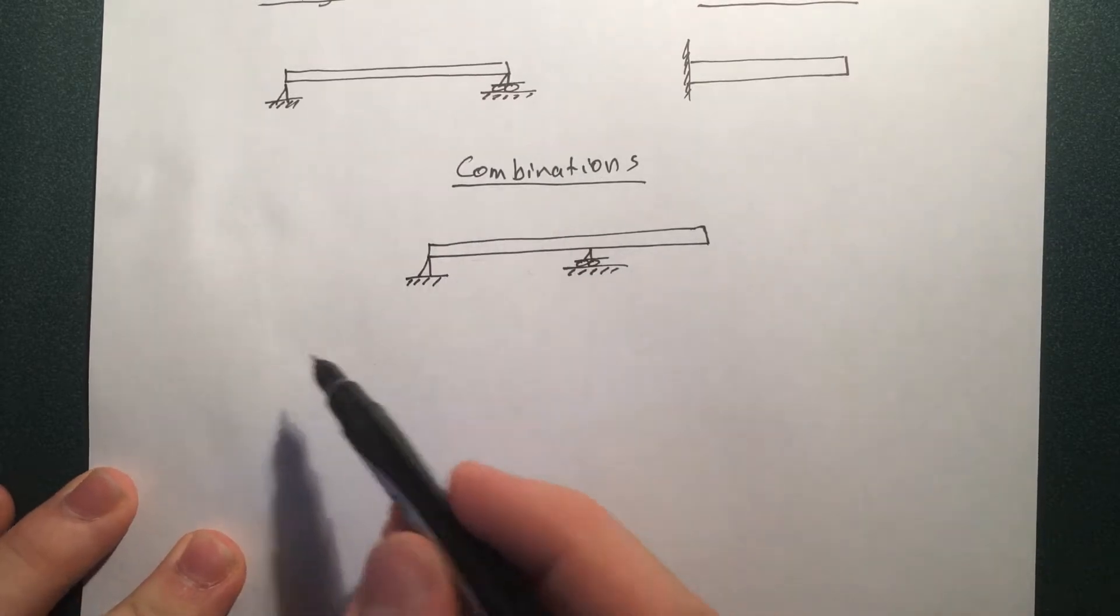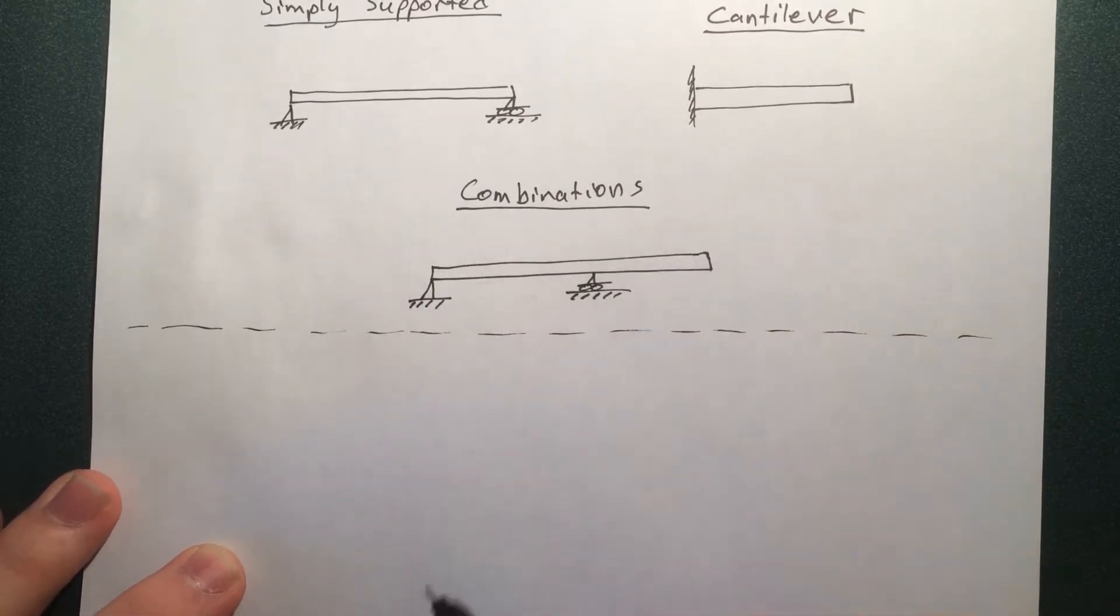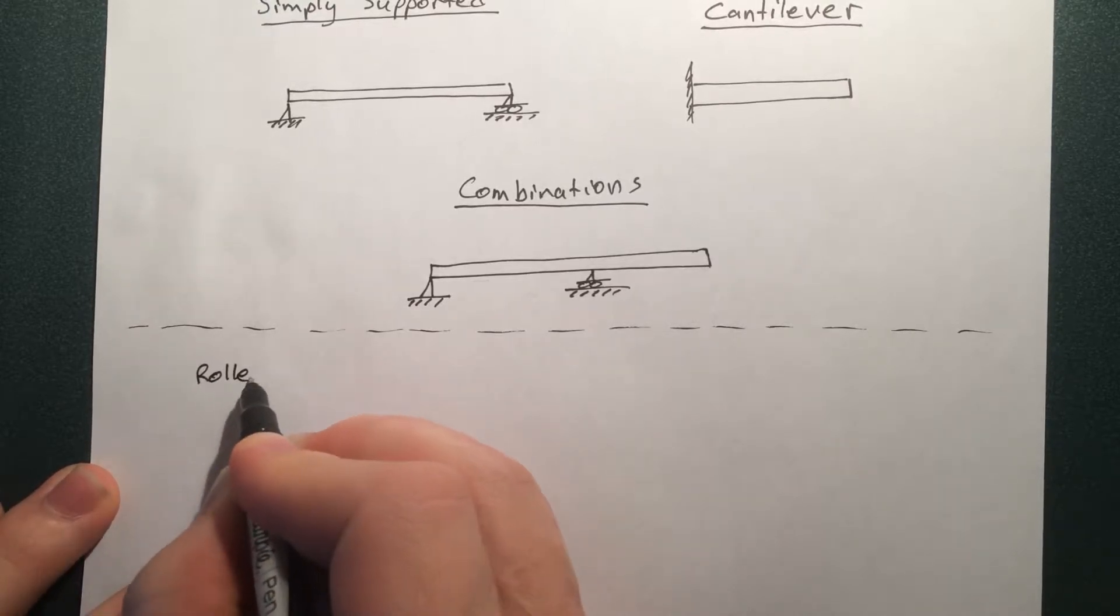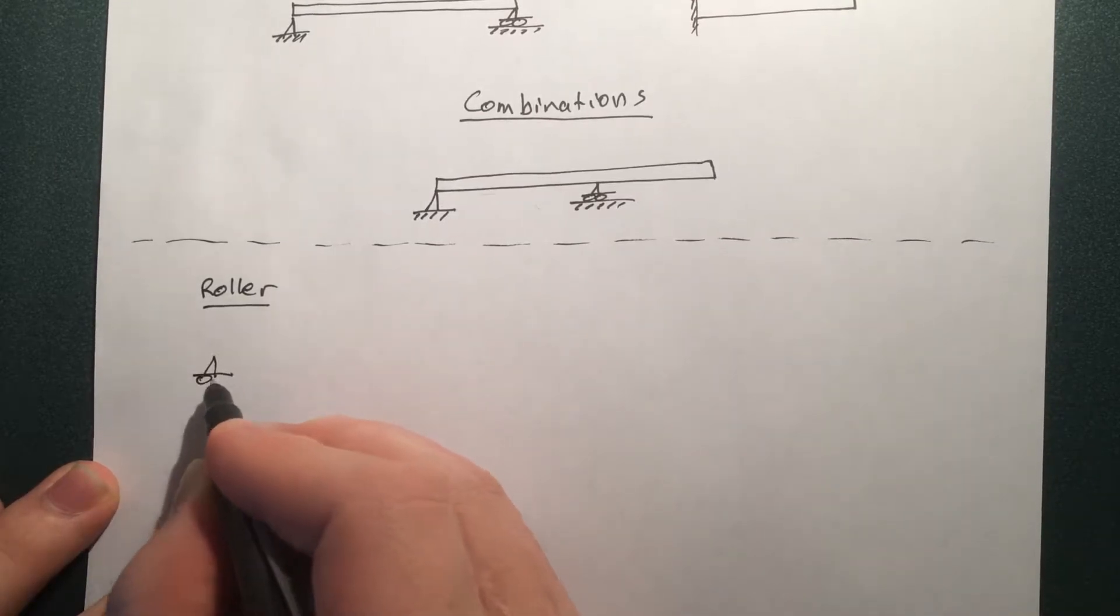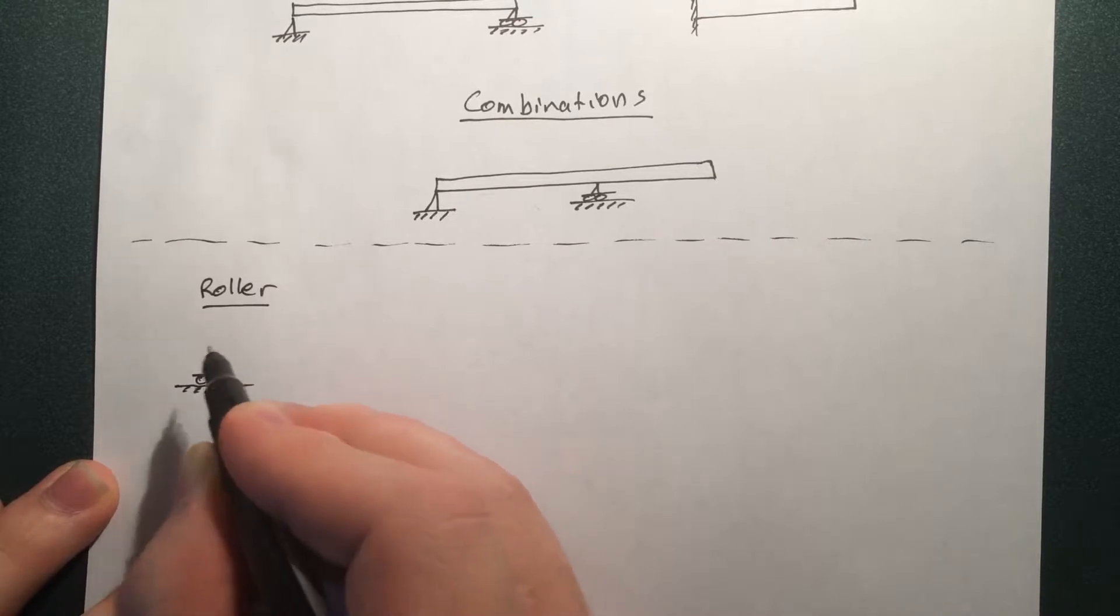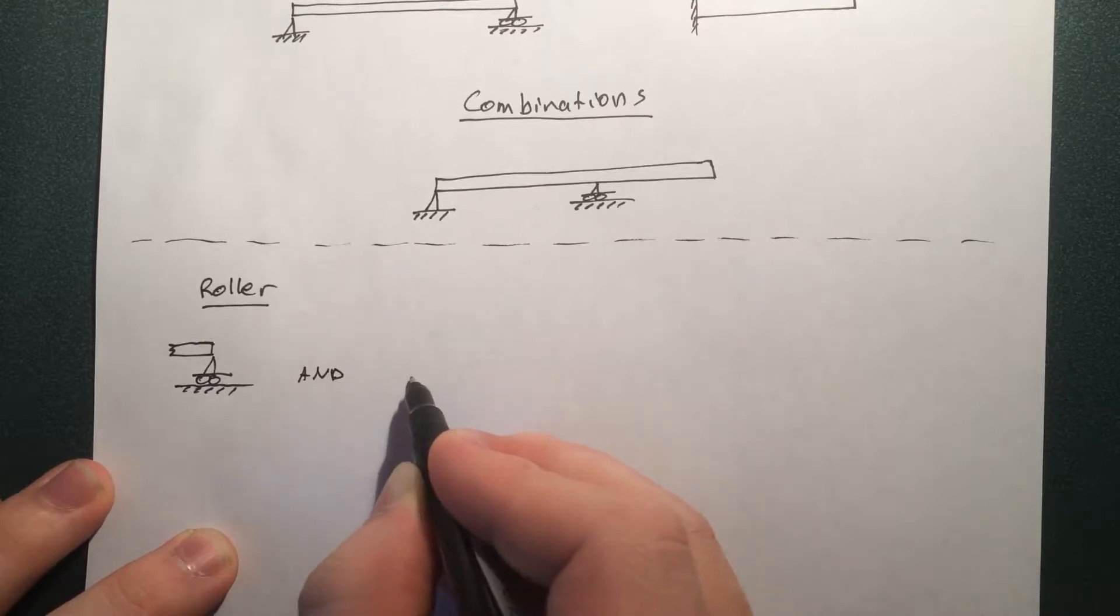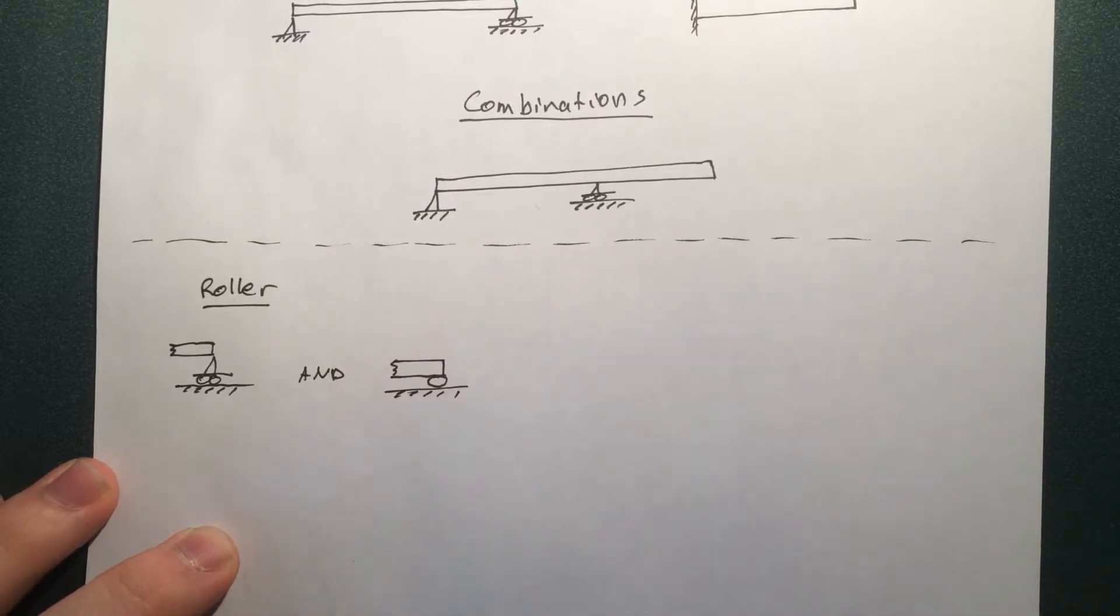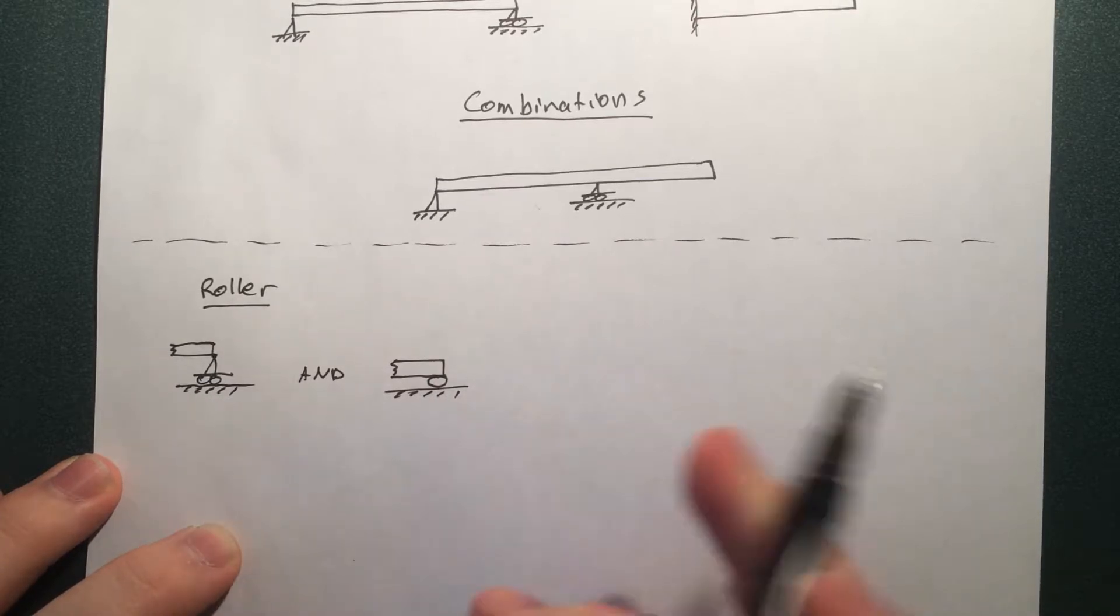So you might have noticed these supports I've been drawing in, so let's take a look at those supports and what they do and how they react differently. The first support I'm going to take a look at are the roller supports. So these are both roller supports, sometimes you see it as like a little cart with wheels on the bottom, or you just see it as like somebody stuck a log in there and it's just resting on top.